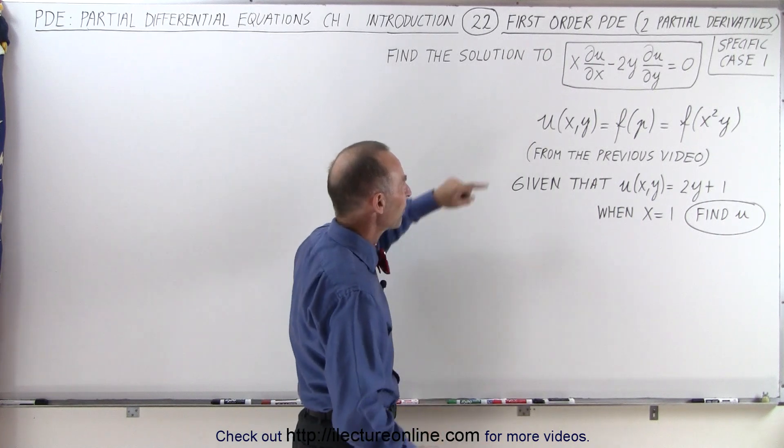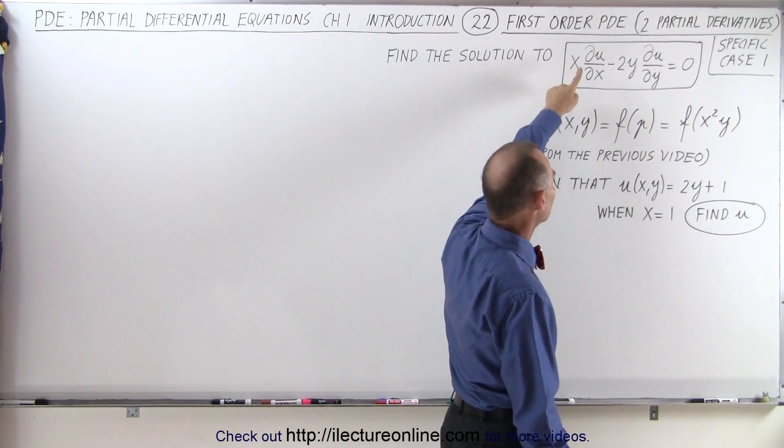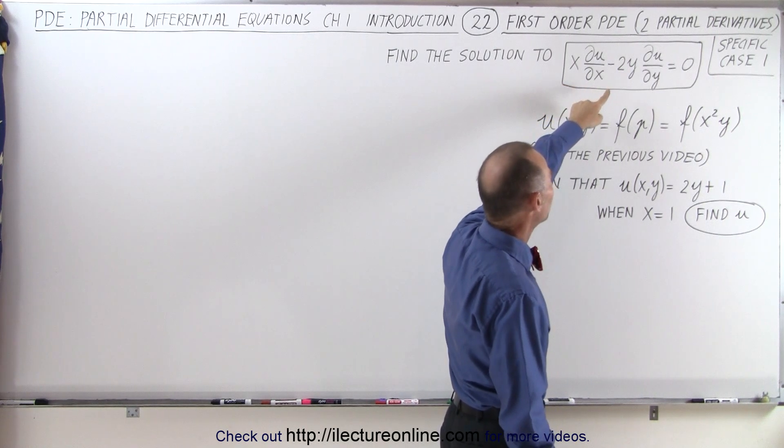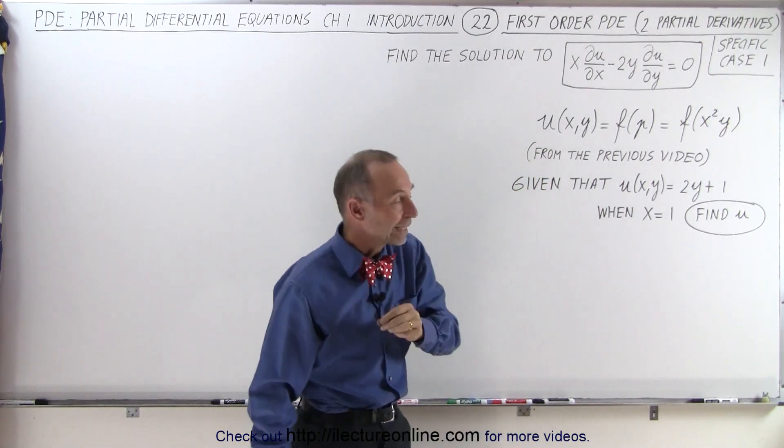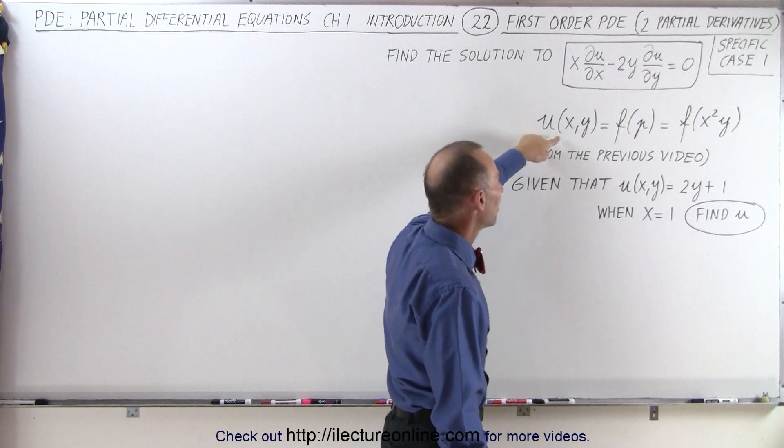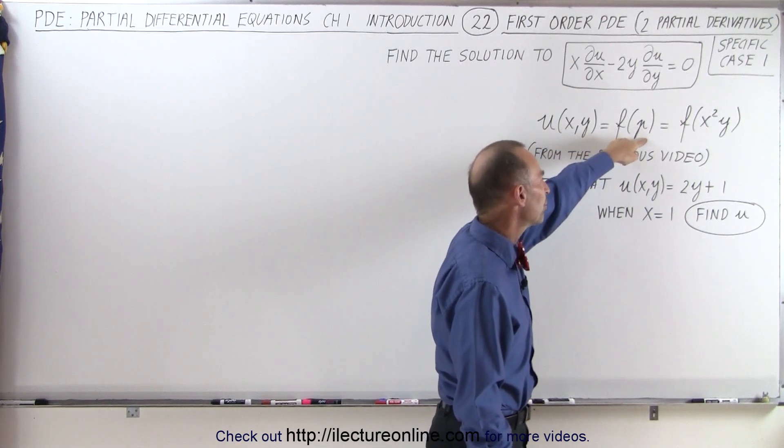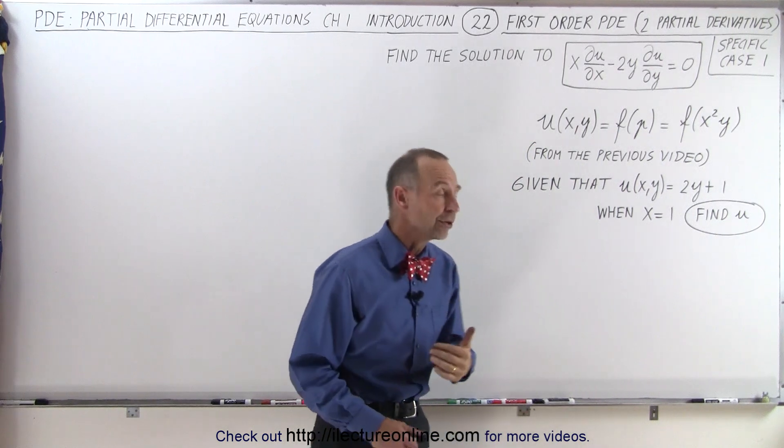So here we found that if we have the partial differential equation of x times the partial of u with respect to x minus 2y times the partial of u with respect to y equals 0, and we took the case where p was equal to constant, u can then be found by finding a function of p which we found to be the function of x squared y. That's from the previous video.